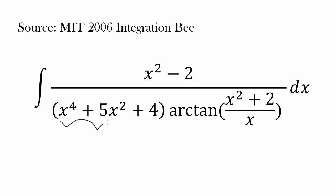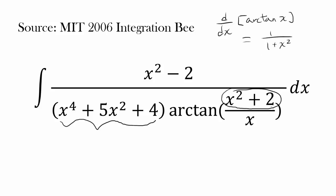This part, x to the fourth plus 5x squared plus 4, seems like you're going to get something like this when you square x squared plus 2 — you're going to get something similar to this. And we know the derivative of arctangent of x from calculus 1 is 1 over 1 plus x squared. So by letting this entire thing be u, you're going to get 1 over 1 plus u squared. So by letting arctangent of (x squared plus 2) over x be u, you're going to square this and that's going to be in the denominator, which is similar to what you want. So maybe that's the way to go — why don't we try that out?